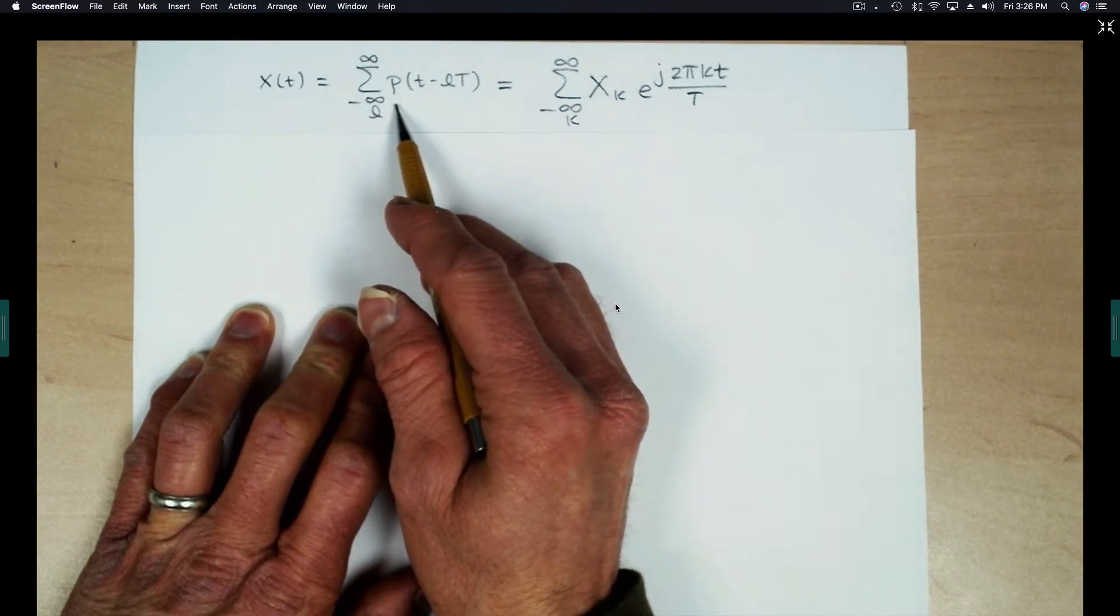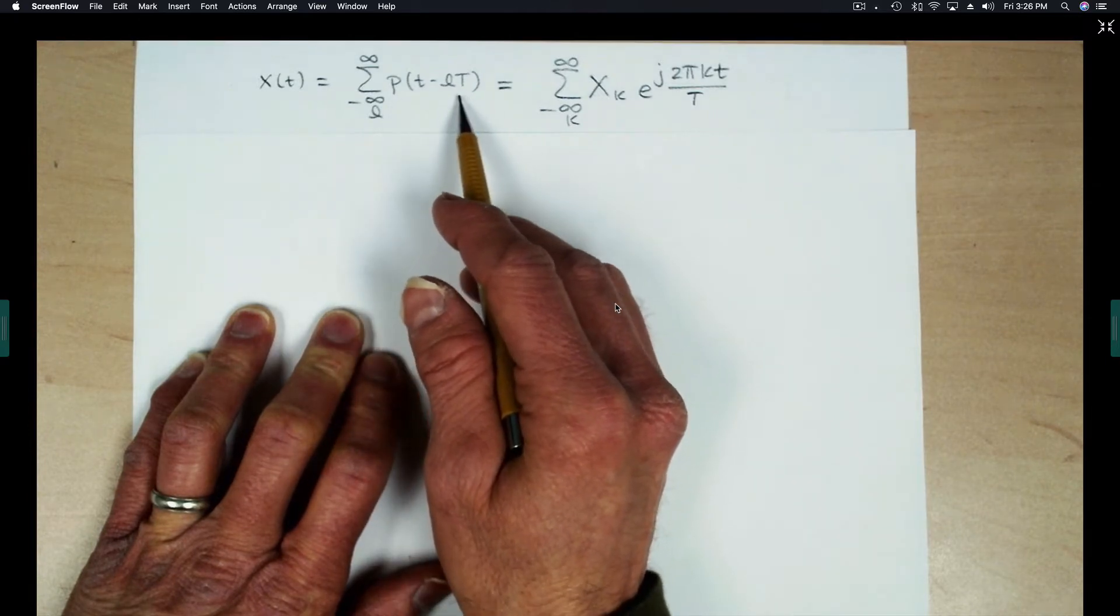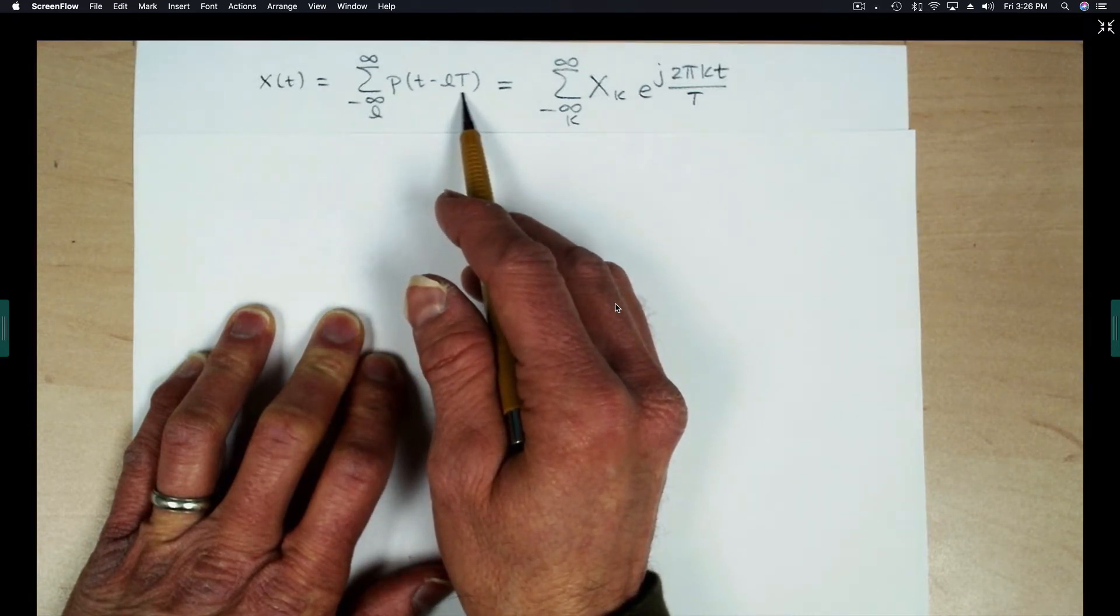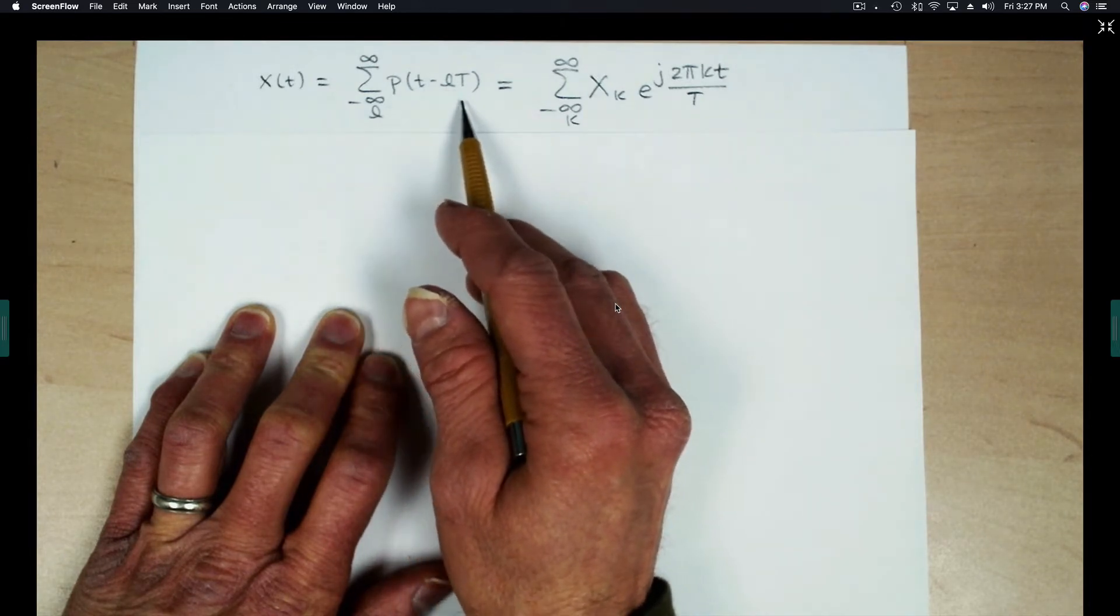Each pulse in the train is a shift, a time shift, of this basic pulse called P of T. The period is capital T because each pulse is delayed by a multiple of T, and there's an infinite number of these pulses.